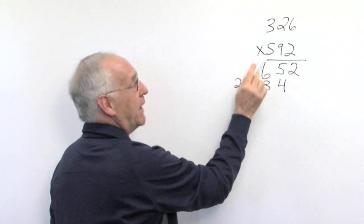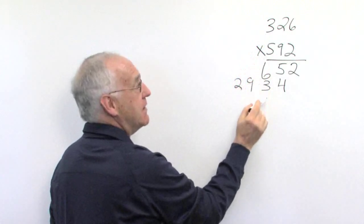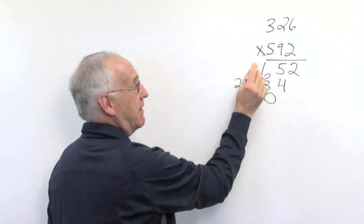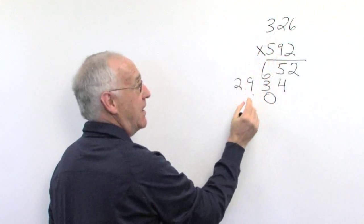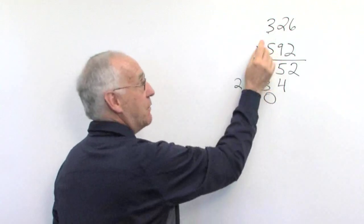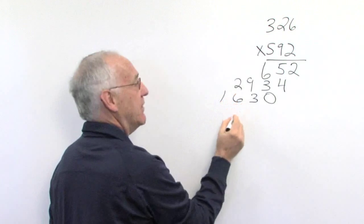Now we'll be multiplying the 5. Remember the indentation again. 5 times 6 is 30. Carry the 3. 5 times 2 is 10 and 3 more is 13. Carry the 1. 5 times 3 is 15 and 1 more is 16.